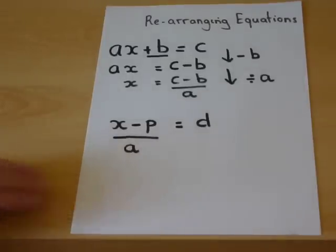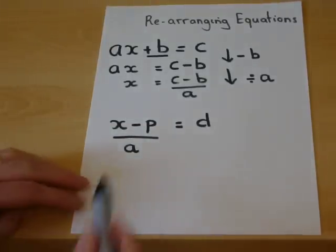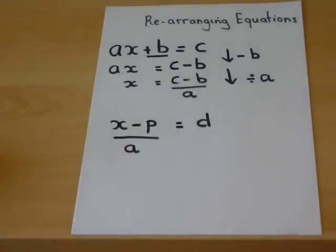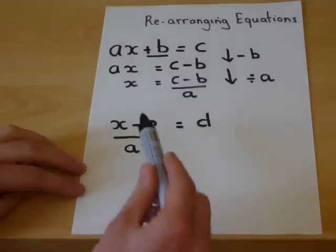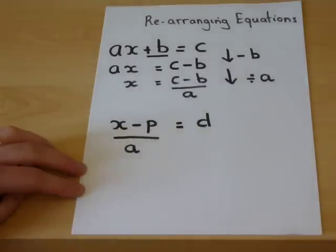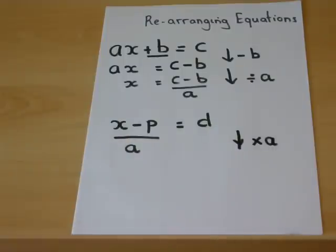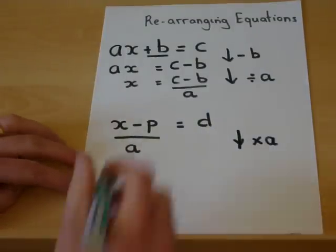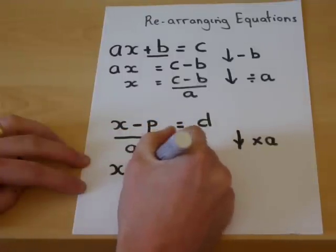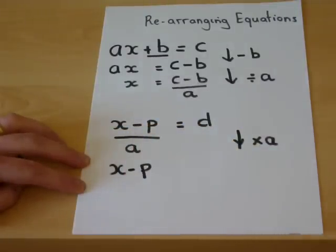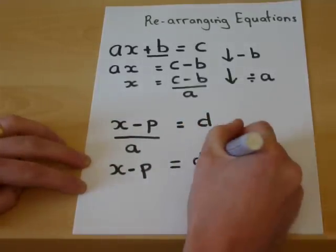The second example begins with an x take away a p, all over a. Now, the general routine is to look at the thing which is most complicated, and in a sense, what's been done last. We took away p, and then divide by a. So first of all, I must times by a, to reverse the last operation done. If I times by a, the left hand side becomes x take away p, because I've cancelled out the divide by a. But the right hand side becomes d times by a.